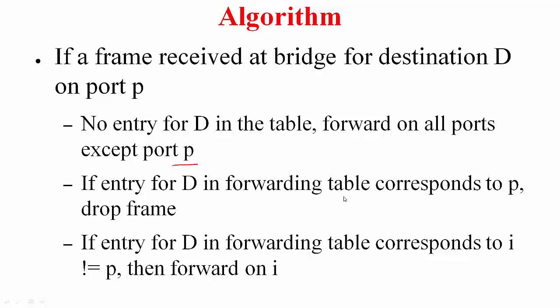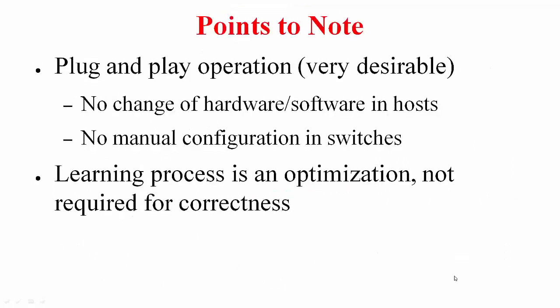Now, suppose if this forwarding table was looked at and it says that this D is on port P and this was the same port on which this particular frame was received, then you do not have to do anything. You have to drop the frame. This corresponds to the case earlier, where host A sent to host B and this was received on port 0 of the bridge and it knows that B is on the same port. So it does not have to do anything, it just drops the frame. Now, the other case is, if entry for D in the forwarding table corresponds to some other port I which is not equal to P, then you forward just on I, not on the other ports. Very simple algorithm.